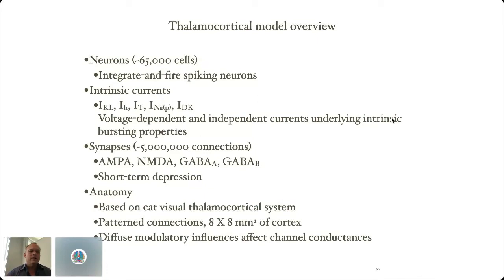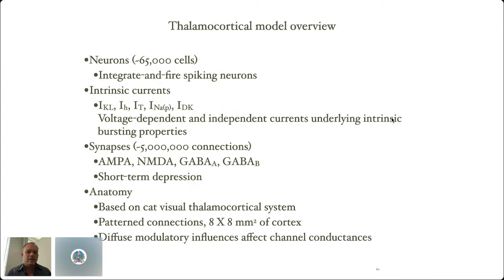This model is built out of integrate-and-fire spiking neurons with intrinsic currents — Hodgkin-Huxley style ion channel currents that endow the neurons with specific intrinsic properties, for example, layer 5 cells having bursting properties. There's fast and slow excitation and inhibition — AMPA, NMDA, GABA-A, GABA-B, and short-term depression — all based on the patterned connectivity observed in the cat visual thalamocortical system.